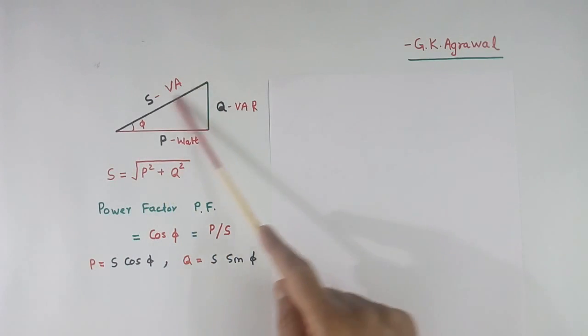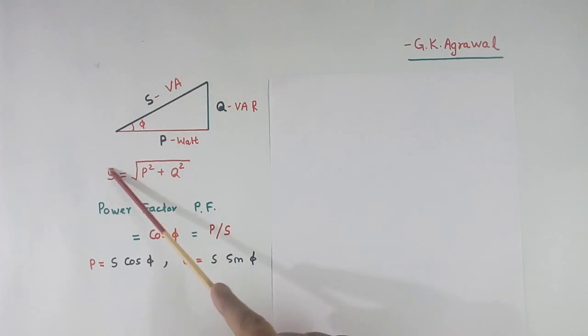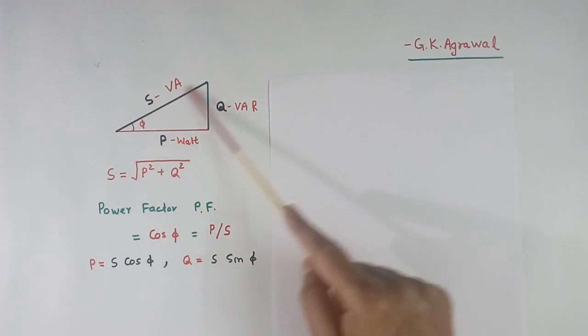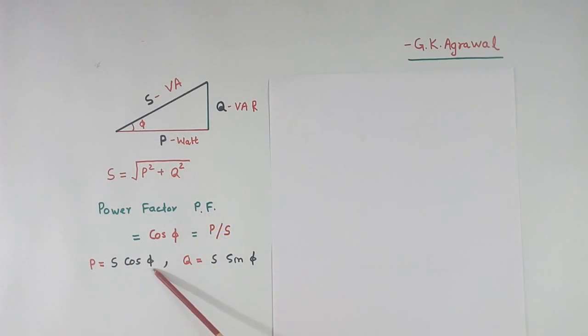This is vector diagram of power. This is active power P. This is reactive power Q. This is apparent power VA, which is equal to square root of P squared plus Q squared. Power factor PF will be equal to cos phi, where phi is the angle between S and P. This is also equal to P by S. Power P will be equal to S cos phi. Reactive power Q will be equal to S sin phi.